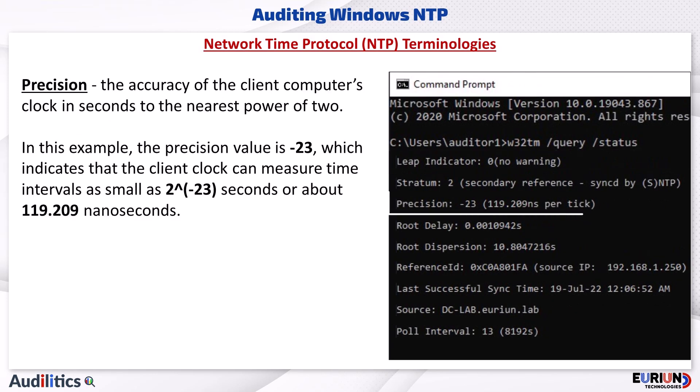Precision. This is the accuracy of the client computer's clock in seconds to the nearest power of 2. In this example, the precision value is minus 23, which indicates that the client clock can measure time intervals as small as approximately 119 nanoseconds.